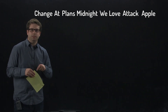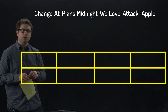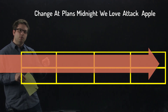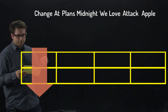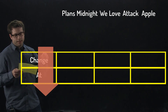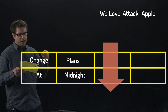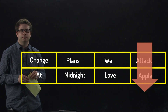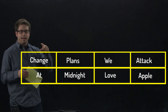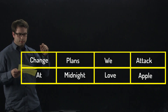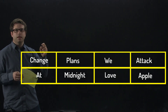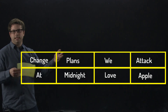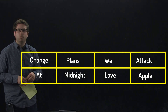I know this message was encrypted using a 2x4 grid — two rows and four columns. To decrypt it, instead of putting the words in a row, we put them down the columns. The first column has 'change at,' the second column has 'plans midnight,' the third column has 'we love,' and the fourth column has 'attack Apple.' Reading off the rows gives the message: 'Change plans we attack at midnight, love Apple.' I'm going to assume that 'love Apple' are filler words associated with this grid. That's a simple example of using a route cipher.